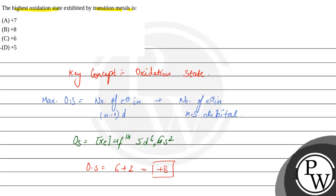This particular molecule — what is it called? Osmium tetroxide. This is osmium tetroxide, where osmium exhibits the +8 oxidation state.